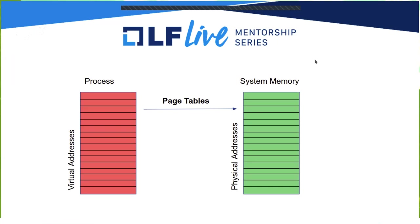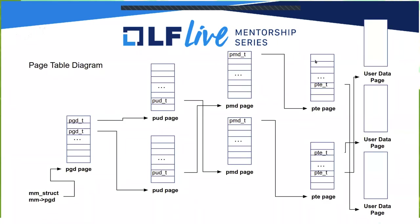This next slide is a high-level view of what page tables look like. Over on the left-hand side, there's an MM struct, which is a structure associated with each process, and within that structure there's a pointer to something called a PGD, or a page global directory. That's just one page which has a bunch of entries that point to another level in the page table, which point to some other things, which point to the next level and the next level, and finally down at the end we get to actual user data — these 4K pages in system memory.